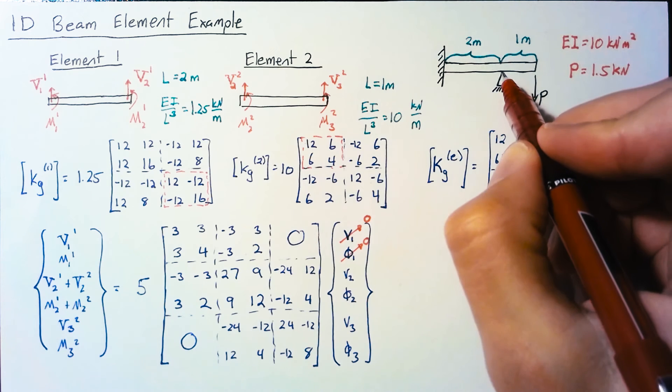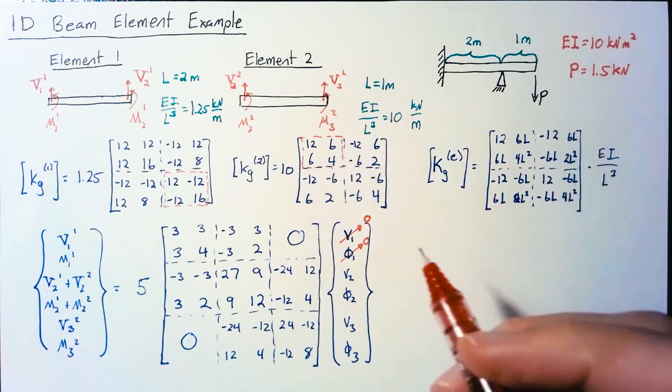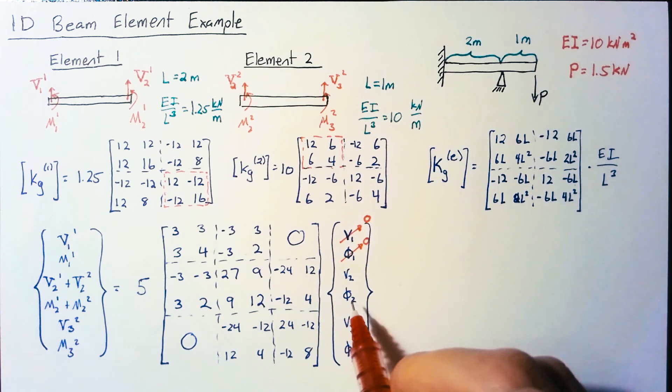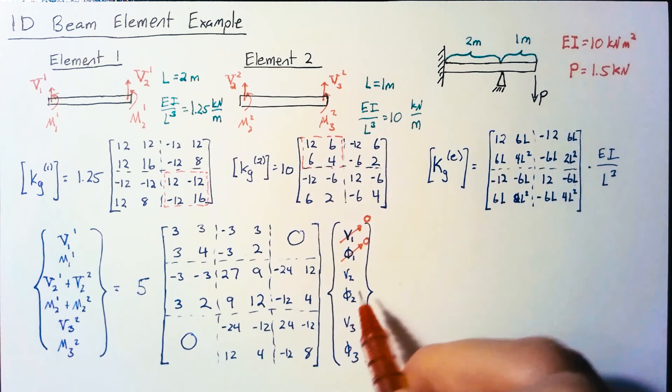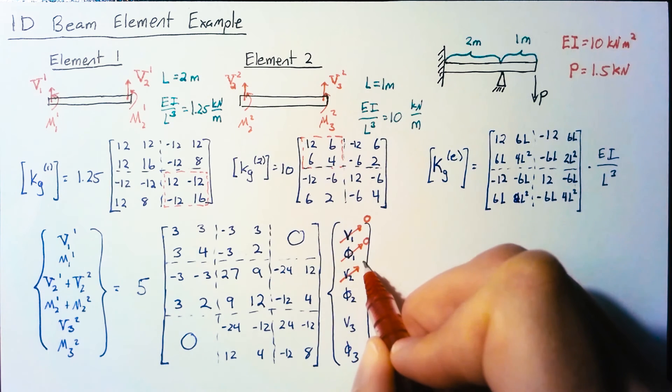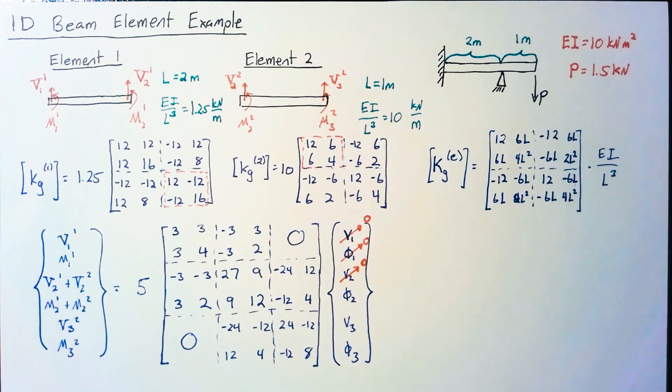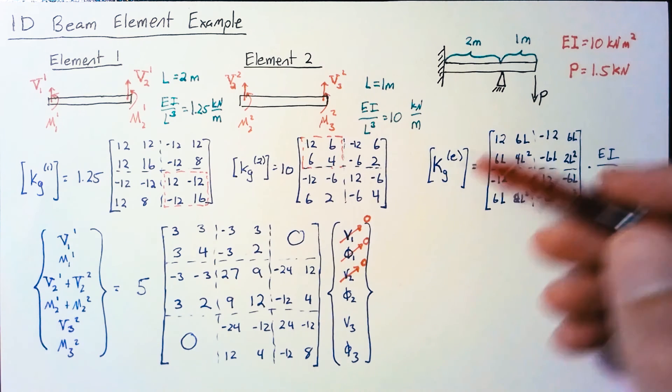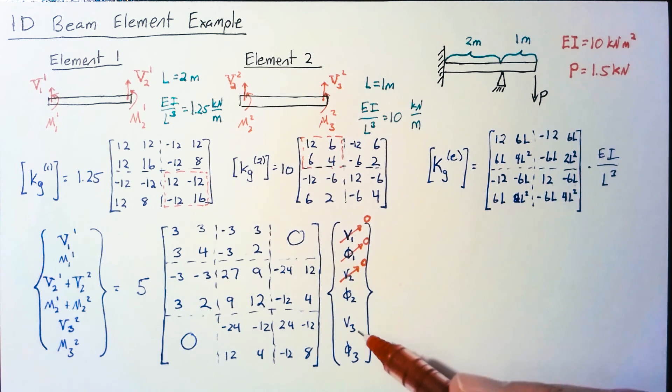Node 2 is on our pin joint which allows rotation so we can't set rotation to zero, but it doesn't allow translation so we can eliminate V2. For node 3, both position and rotation are not defined and could be anything.